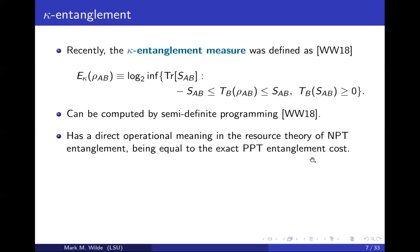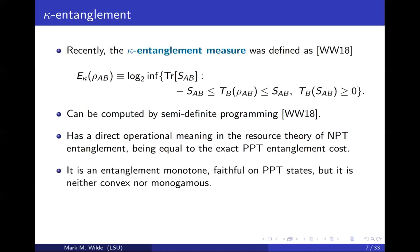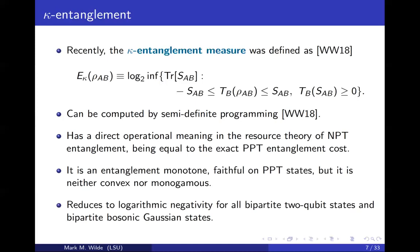This kappa entanglement measure can be computed by SDPs, and it has a direct information theoretic meaning in the resource theory of NPT entanglement. It is an entanglement monotone — a sensible result given it arises as the answer to an operational task. It's also faithful on PPT states, equal to zero if and only if the state is PPT. But like the logarithmic negativity, it's neither convex nor monogamous. For some special states like two-qubit states and bosonic Gaussian states, it reduces to the logarithmic negativity — but in general it can be different. In fact, logarithmic negativity and kappa entanglement are two extremes of a whole family of logarithmic negativity entanglement measures.